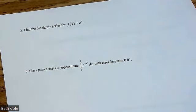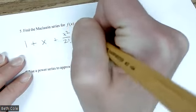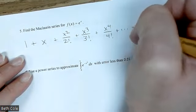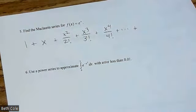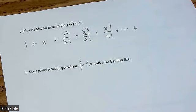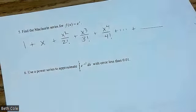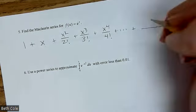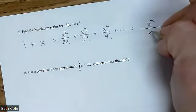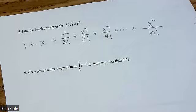E to the x doesn't alternate and doesn't skip any — you just get everything. So it's 1 plus x plus x squared over 2 factorial plus x to the 3rd over 3 factorial. The reason you get everything is because the derivative of e to the x is itself. The general form is just x to the n over n factorial — no negative 1 to the n needed because it doesn't alternate.